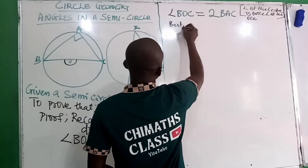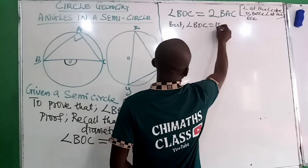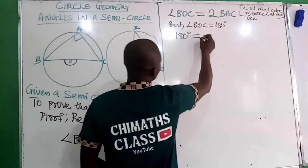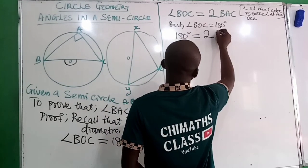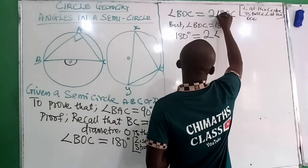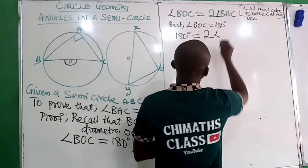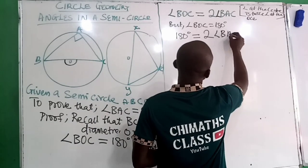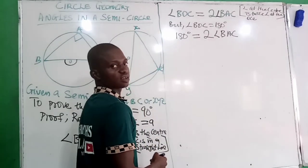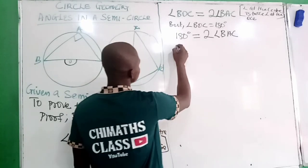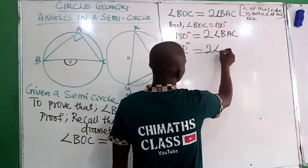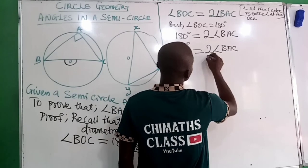But angle BOC is equal to 180 degrees — angles on the straight line. So we have 180 degrees is equal to two times angle BAC. We want to make angle BAC the subject of the formula, so we divide both sides by two. So 180 degrees divided by two equals two times angle BAC divided by two.